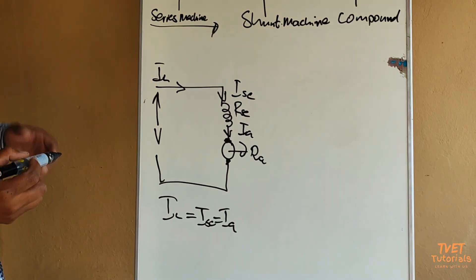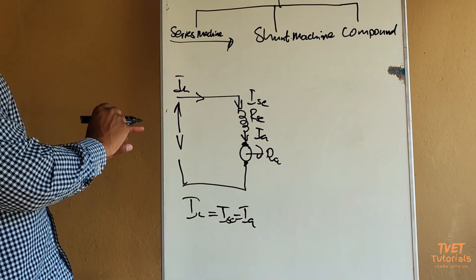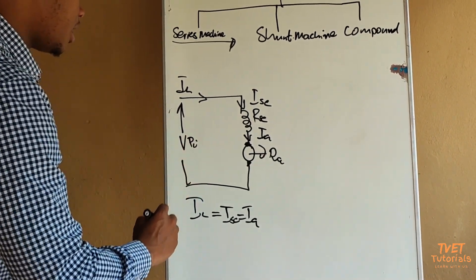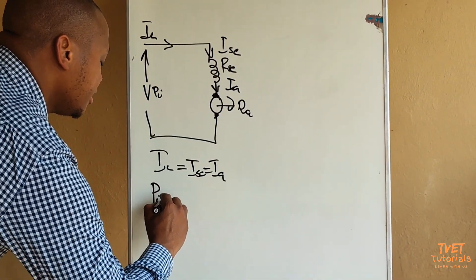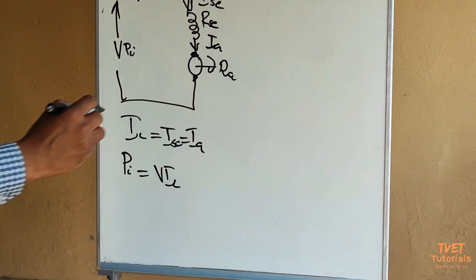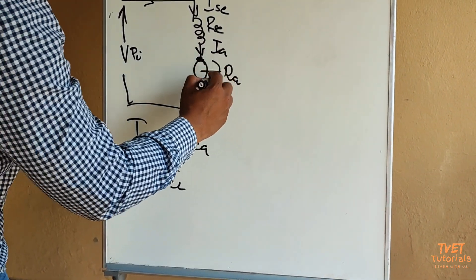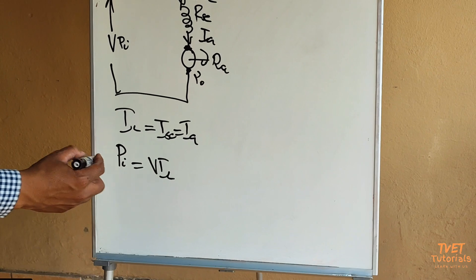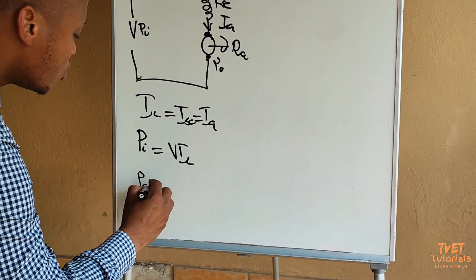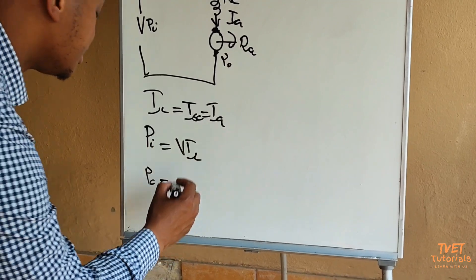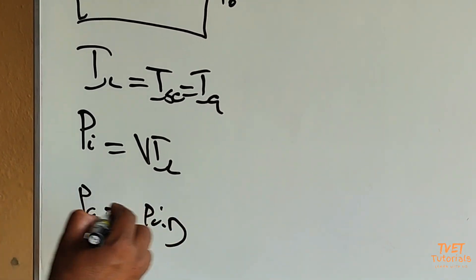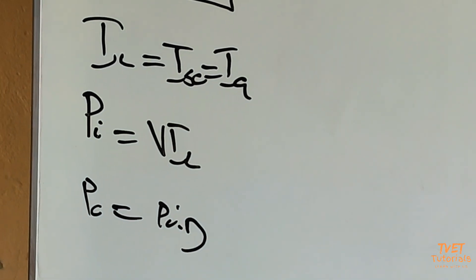The next thing that we take into note is that this is a motor so it will get an electrical input power which is PI equals VIL, and we will get a mechanical output power PO. The output power if you have an efficiency, PO will then be equal to PI multiplied by the value of the efficiency that would be given to you.